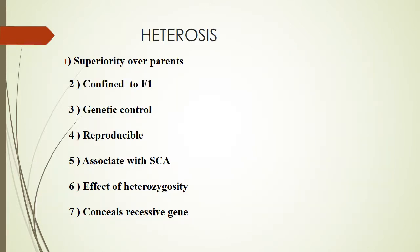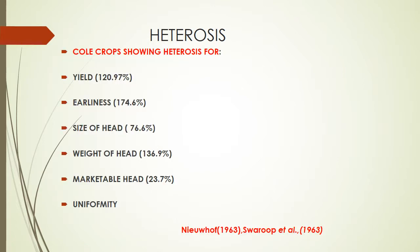Coming to heterosis in cole crops. Heterosis is superiority over parents, confined to F1, genetic control, reproducible, associated with specific combining ability, effect of heterozygosity, and conceals recessive genes. In cole crops there are several reports of increased yield comparing to desi or local varieties: yield 120% more, earliness 174%, size of head 77%, weight of head 134%, size 37%, marketable head 24%, and more uniformity.